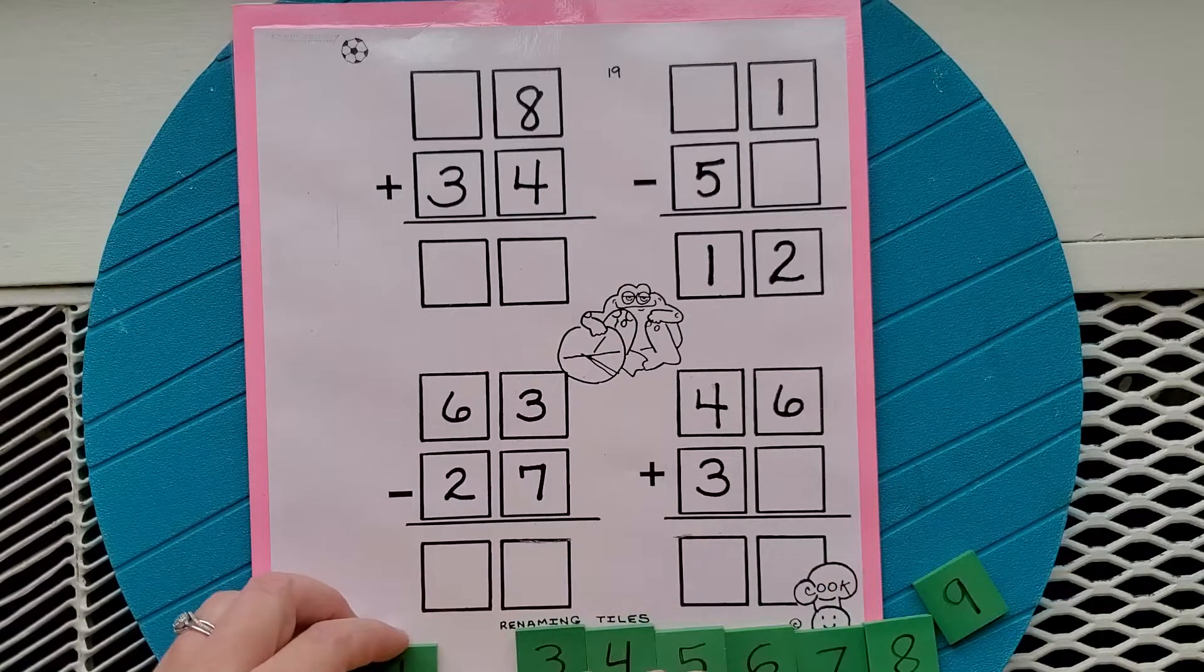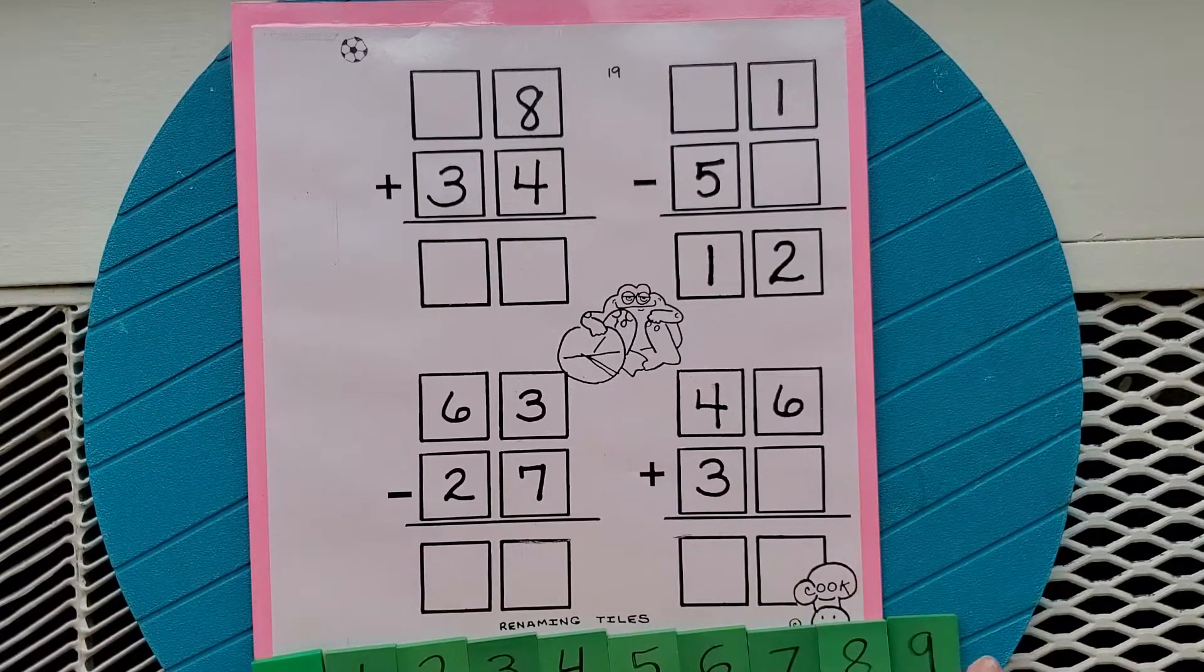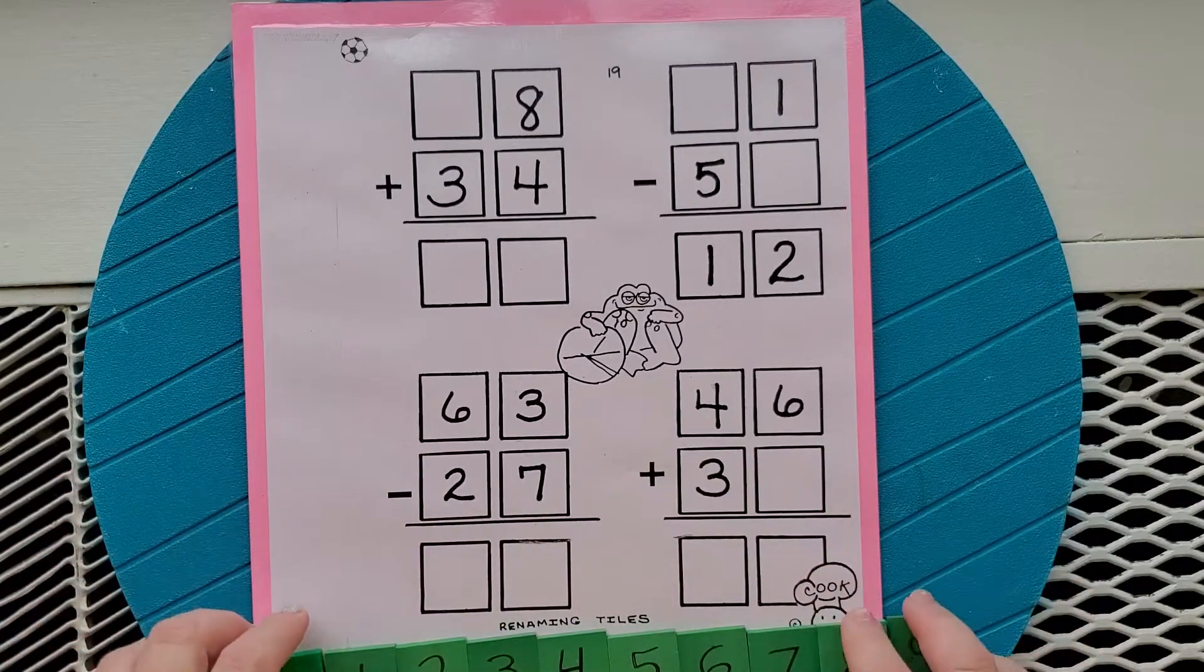So now, in order to play Renaming Tiles, all 10 of these tiles, from 0 to 9, have a spot on here that makes these equations true.